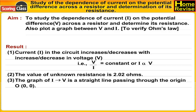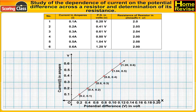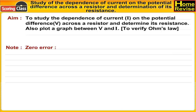The graph of I versus V is a straight line passing through the origin (zero, zero). This is the graph of potential difference and current.